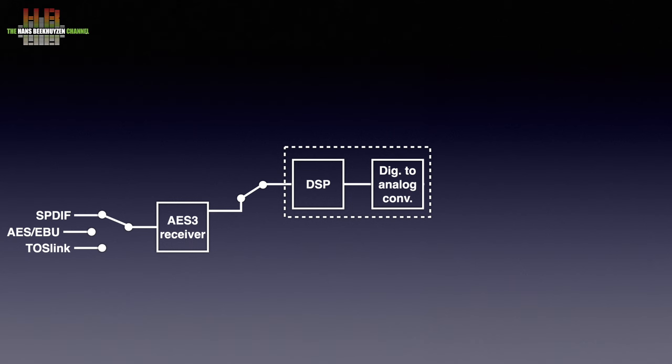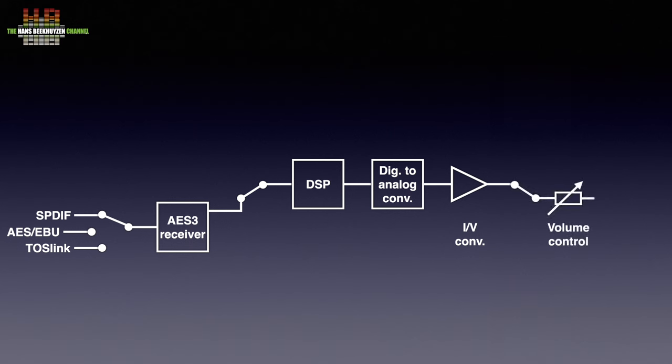In more upmarket products these two functions can be separate. The output of the digital to analog conversion is a current. Since nowadays audio components are connected over voltage connections, a current-to-voltage circuit follows. Then an analog volume control might follow, after which an output buffer circuit sends the analog signal to the outputs.